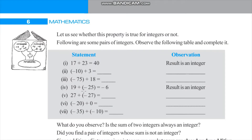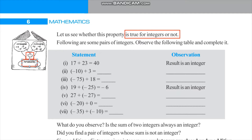Let us see whether this property is true for integers or not. What exactly the closure property means is: take any set — in this case, the set of integers. Once you take the set of integers, if you take any two members of this set and conduct the operation of addition, here we have a representation. This is the operation we are conducting, that is addition.